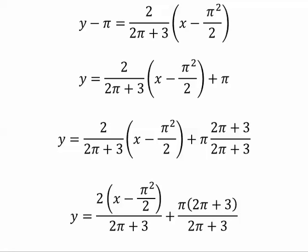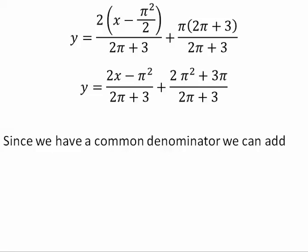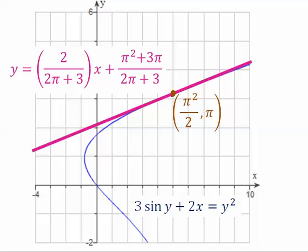Alright, so now we need to actually multiply, which involves distributing. Since we have a common denominator, we can add these two terms. After we add the two terms, we break it back up. We want the x with a coefficient in front of it, and then we want plus everything else. And so we now have the equation of the line tangent to the graph at the given point.